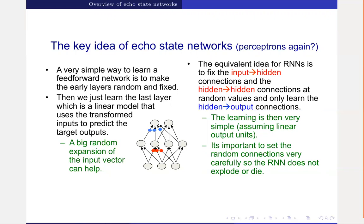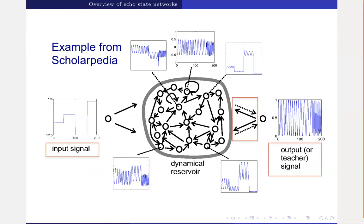The echo state network is a computationally very light model. We have what's called a dynamical reservoir — you start from anywhere in this reservoir, and it has some kind of dynamic behavior. Each starting point gives different dynamic trajectories. You can imagine training a model to have certain dynamic behavior, for example a frequency generator: at certain periods you oscillate at low frequency, then you increase the frequency, then decrease, and so on.